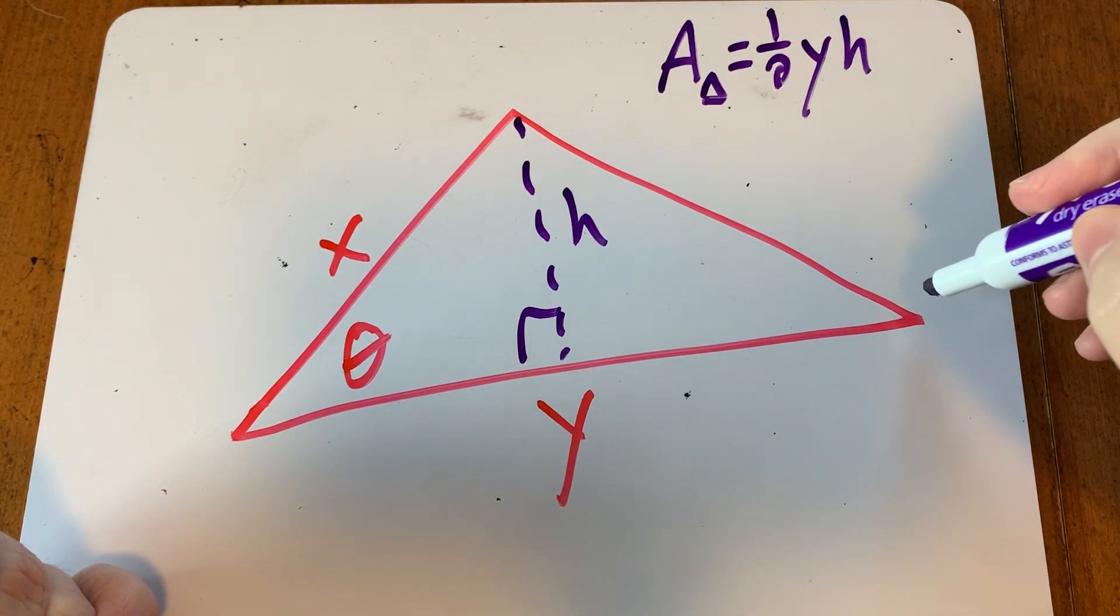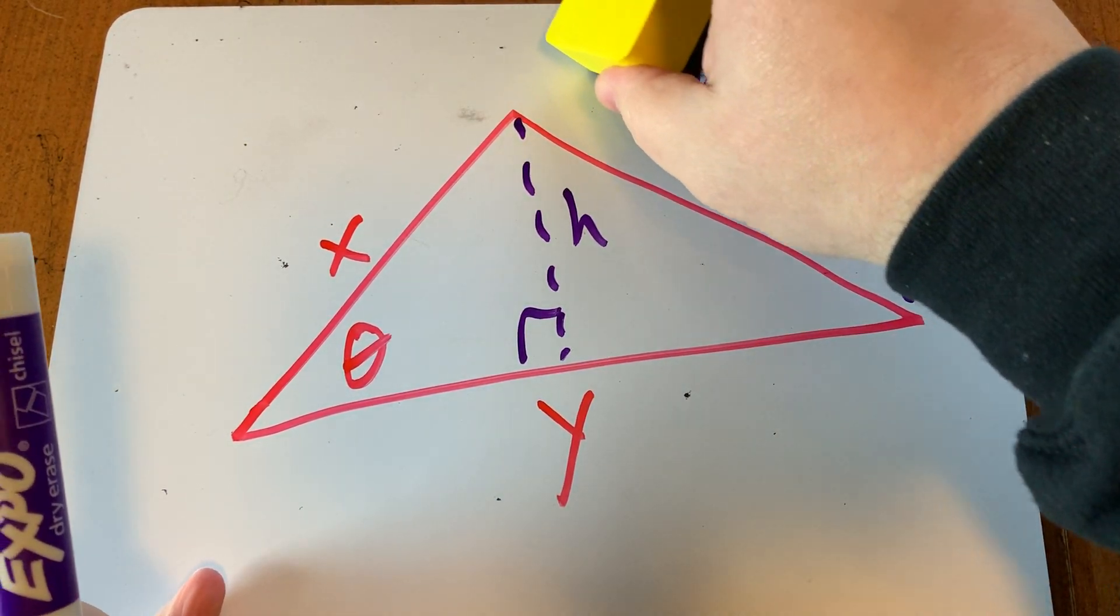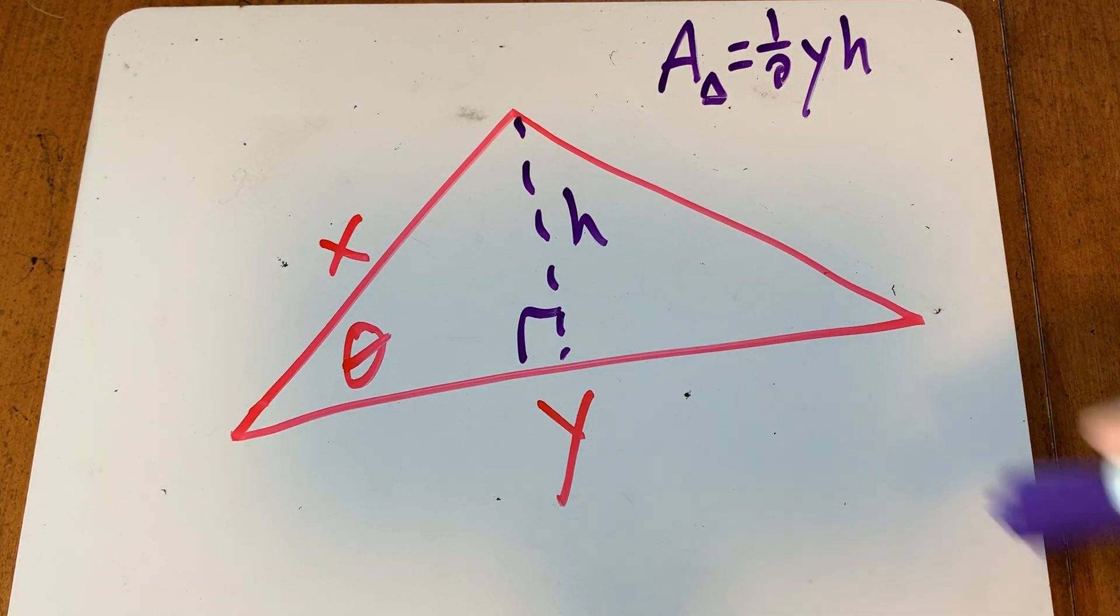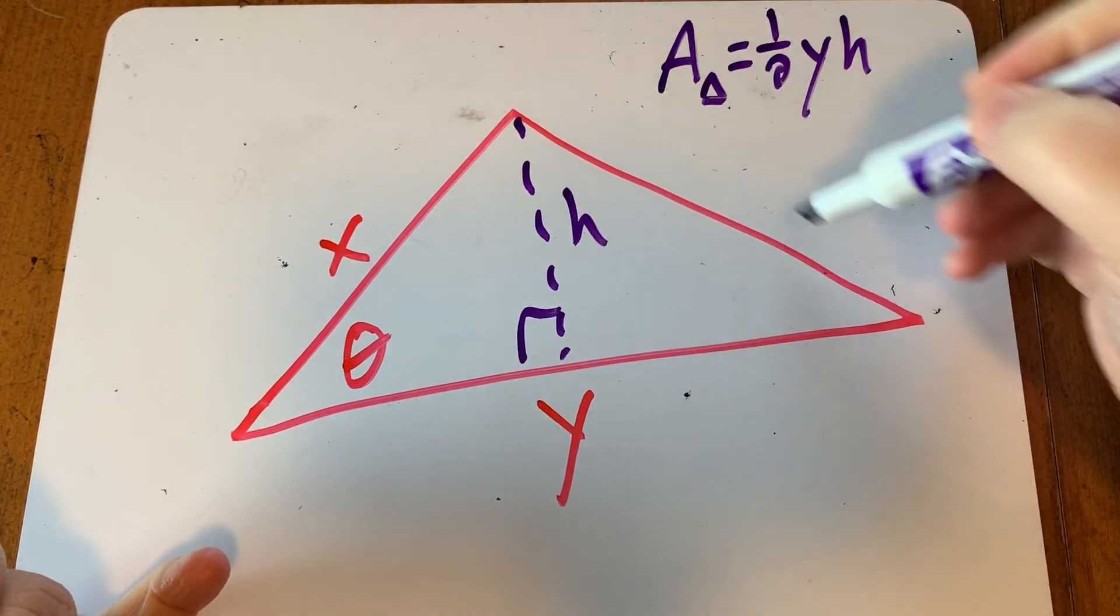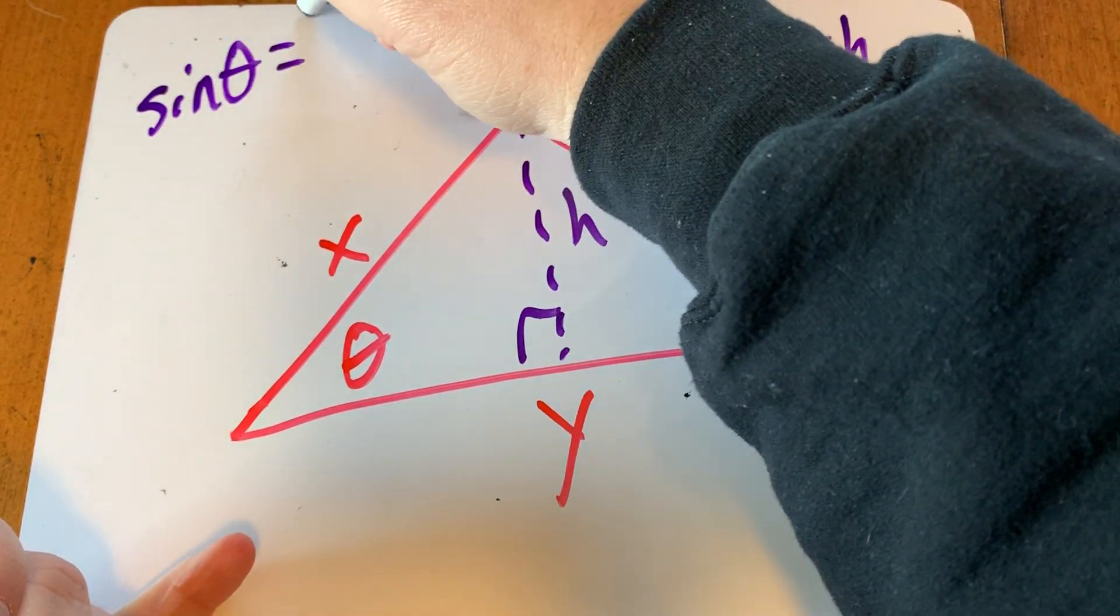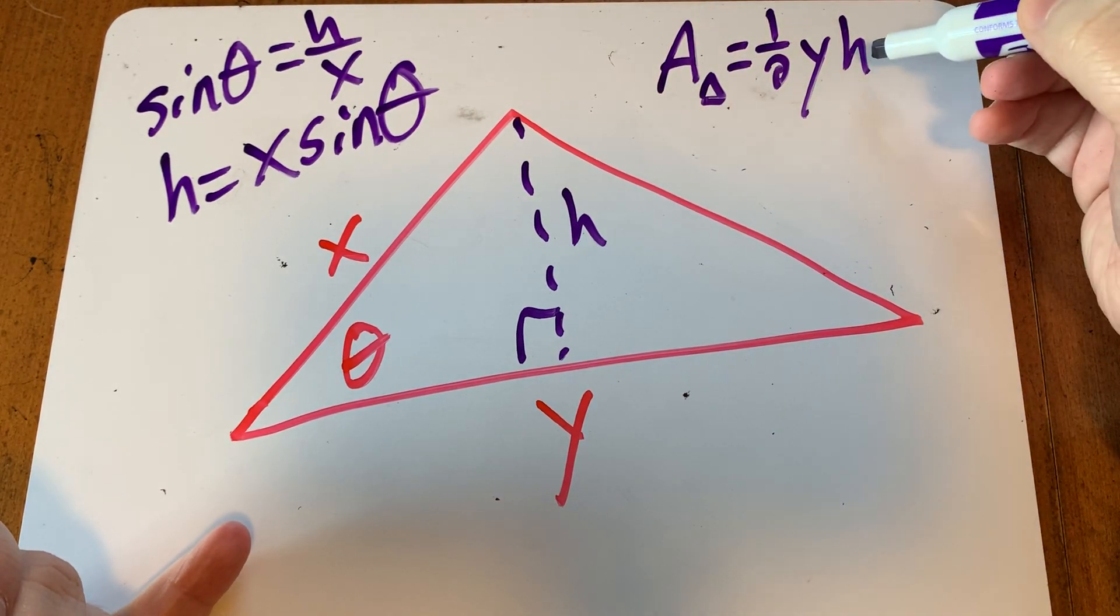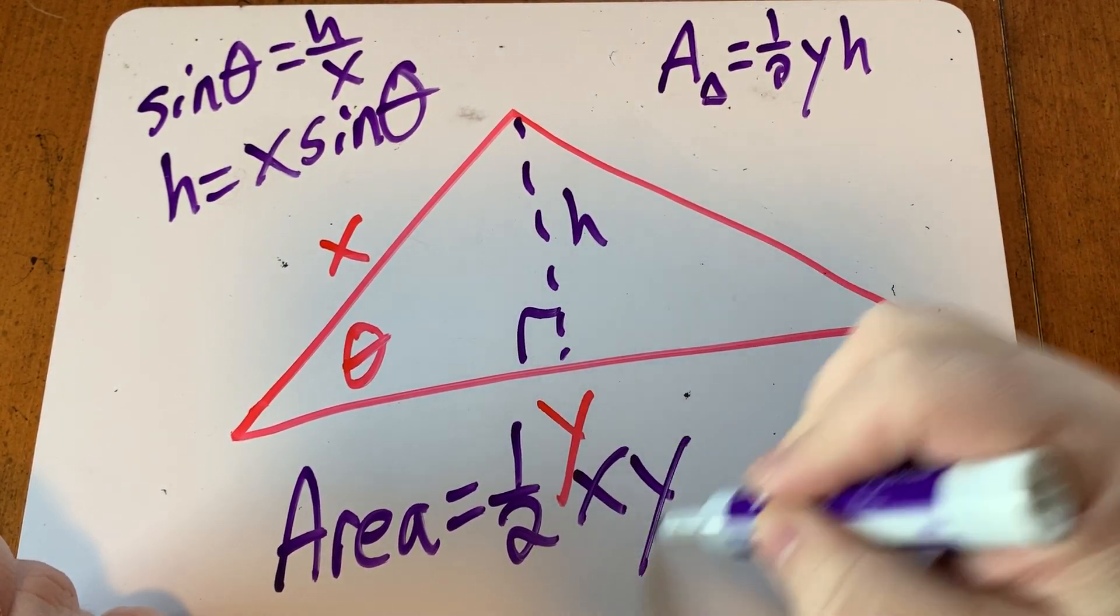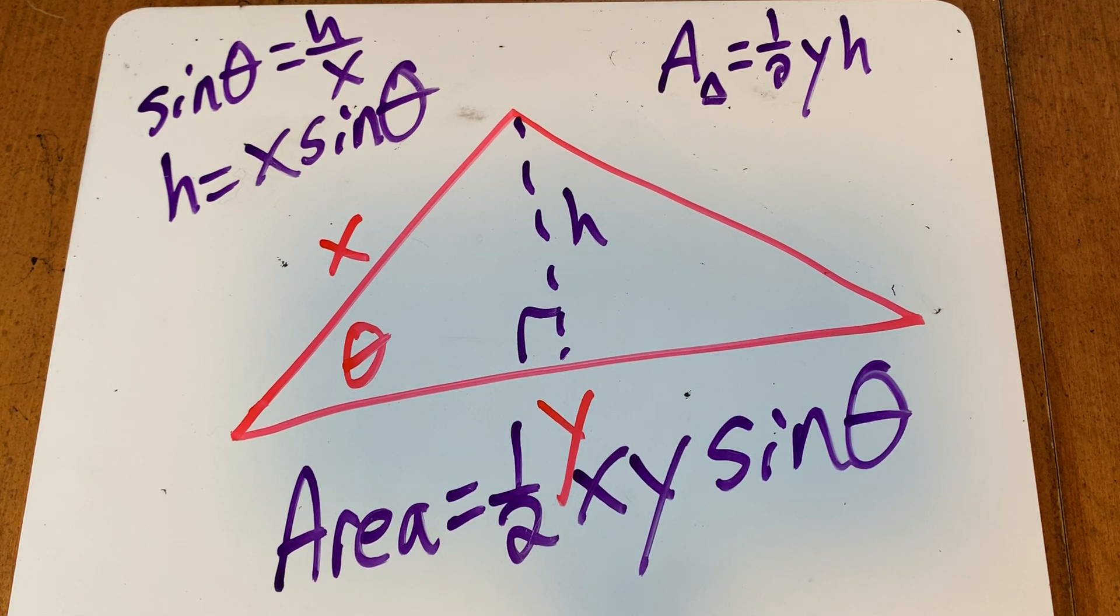The height when you drop it down, whether you drop it down here or you drop it down out there, it's still going to be opposite from angle theta. That's going to be the opposite, and this side that isn't our base is going to be the hypotenuse in the right triangle. If we have the height out here, the y would be the hypotenuse and x would be our base. So sine of theta equals h over x, so the height equals x sine of theta. When you plug x sine of theta in for h, area equals 1/2 times x y sine of theta. Anytime you have two sides and the included angle, you can find the area of the triangle like that.